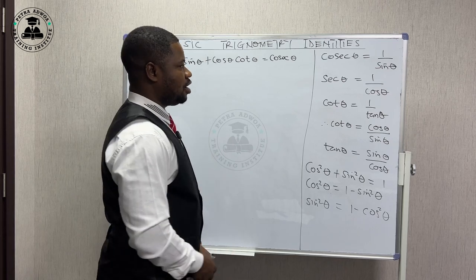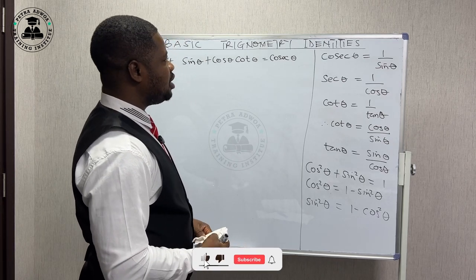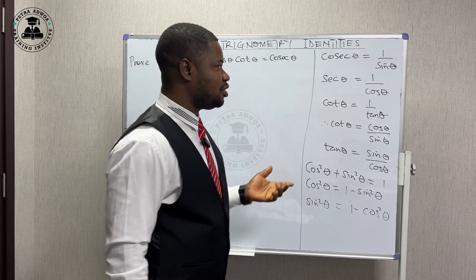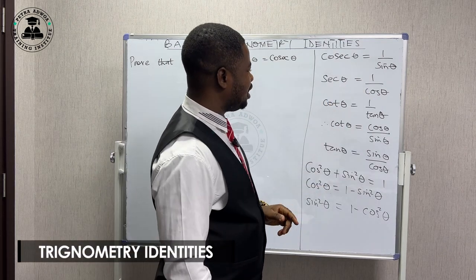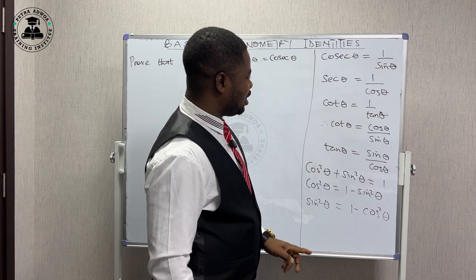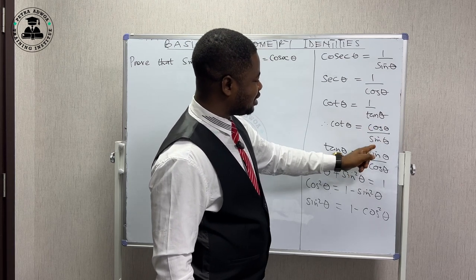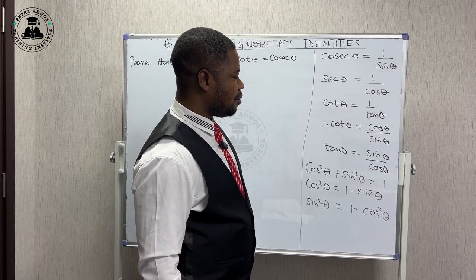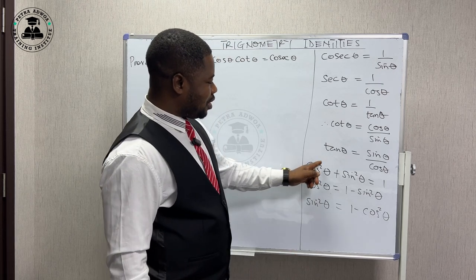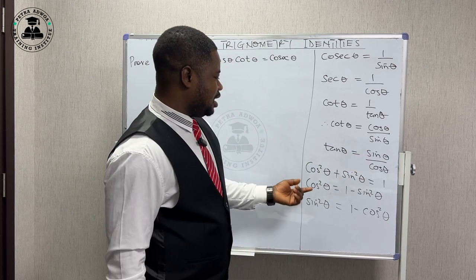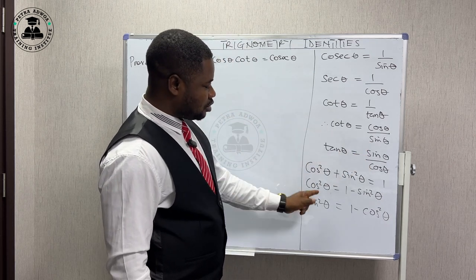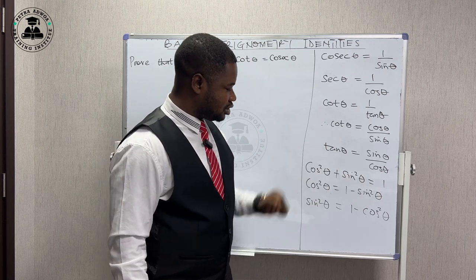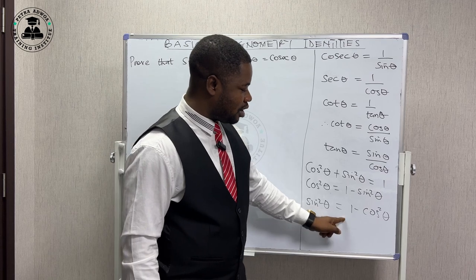We are continuing our class. We know that cosec theta is one over sine theta, sec theta is one over cos theta, cot theta is one over tan theta, and cot theta also gives us cos theta over sine theta — because tan theta equals sine theta over cos theta. We also know that cos squared theta plus sine squared theta equals one, which gives us cos squared theta equals one minus sine squared theta, and sine squared theta equals one minus cos squared theta.